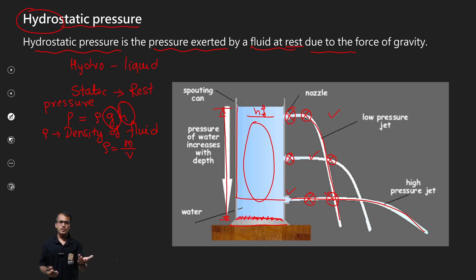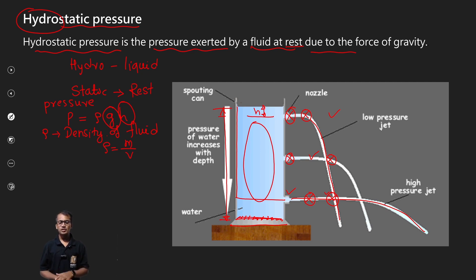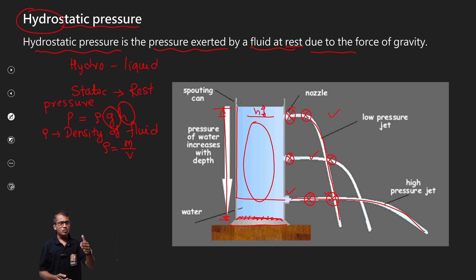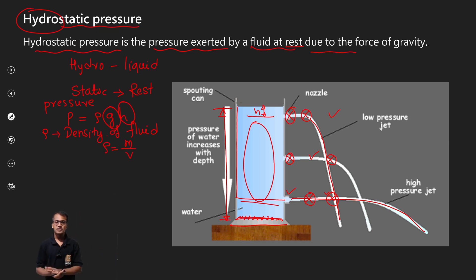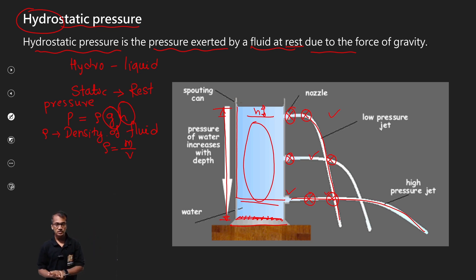If you observe the water tank, you can see that the height of water determines the pressure at each nozzle. The jet with more height has greater pressure.